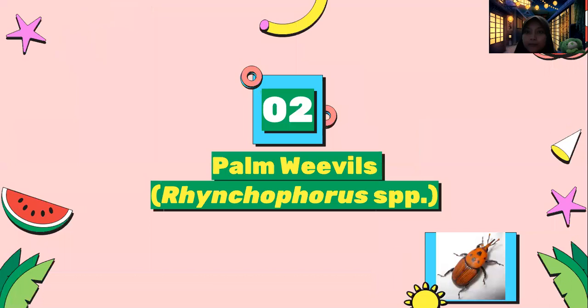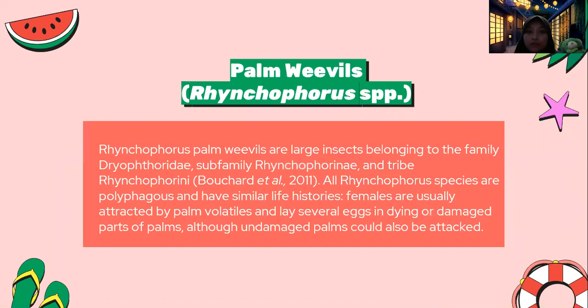The second pest is the palm weevil, or Rhynchophorus spp. Palm weevils are large insects belonging to the family Dryophthoridae, the subfamily Rhynchophorinae, and tribe Rhynchophorini. All Rhynchophorus species are polyphagous and have similar life histories. Females are usually attracted by palm volatiles and lay several eggs in dying or damaged parts of the palm, although undamaged palms can also be attacked.